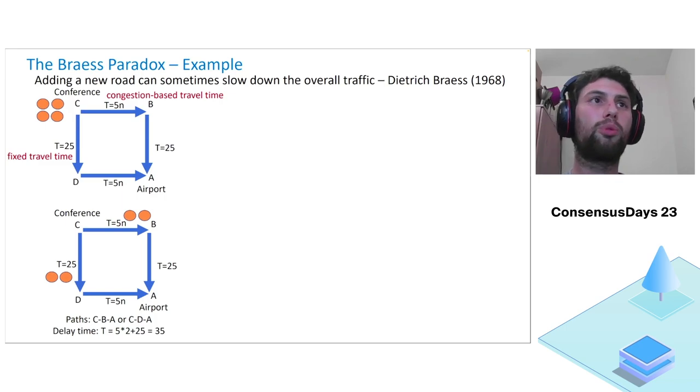Assume we have four people who want to get from some conference C to the airport A. We notice that some roads, like the road between C to B, the traffic time depends on the number of people using it. In our case, 5N, meaning if there is one person using it, it takes five minutes, and if there are three people using it, it takes 15 minutes. Meanwhile, other roads, like the road between C and D, take a constant time. In our case, 25 minutes, no matter how many people are using it. That's how our network looks.